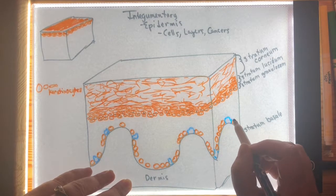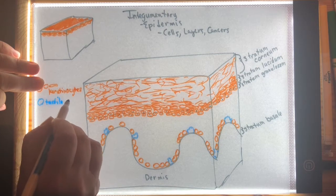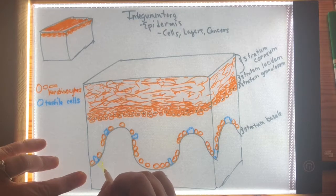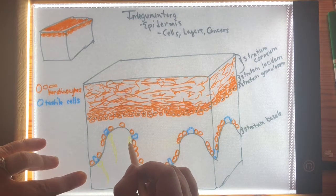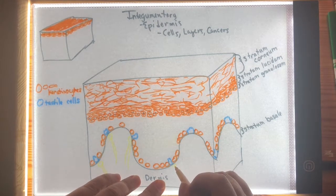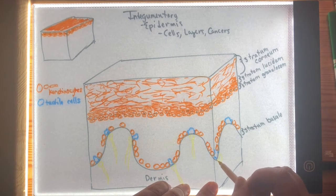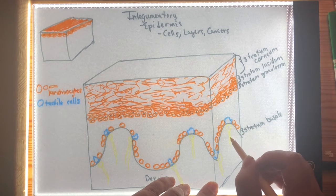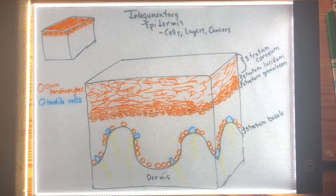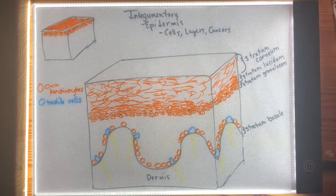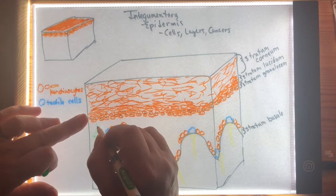Now we're going to fill in some cells in blue — these are cells that are actually sensitive to touch, called tactile cells. We're also filling in sensory nerve endings in yellow. Even in the epidermis — just the most superficial portion of skin — there is quite a lot going on. You have tactile cells that are sensitive to touch right up at the most superficial layer of the skin in the epidermis, not in the dermis.